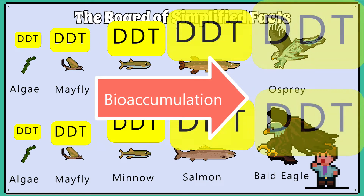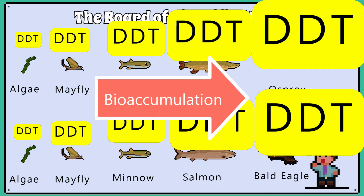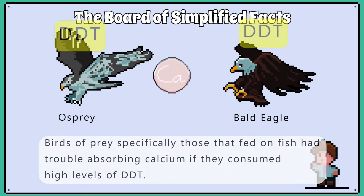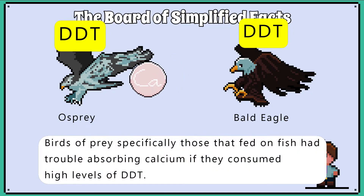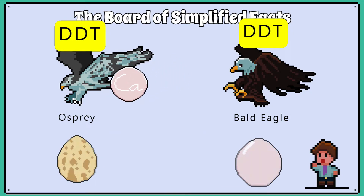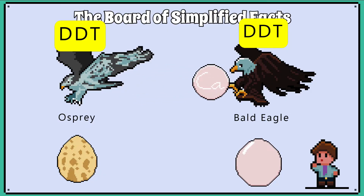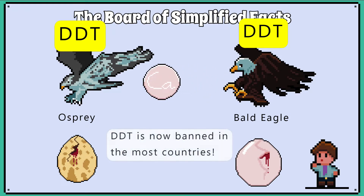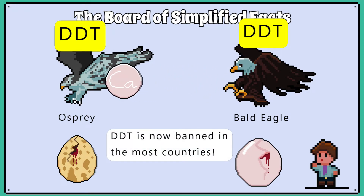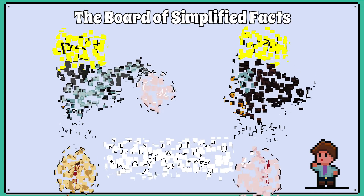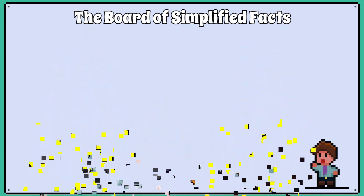Birds of prey, specifically those that fed on fish, had trouble absorbing calcium if they consumed high levels of DDT. This meant they had fertility issues — specifically, the eggs they produced had thinner shells and broke before the chicks developed properly for hatching.